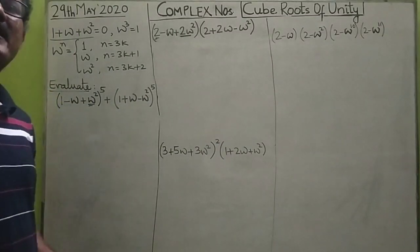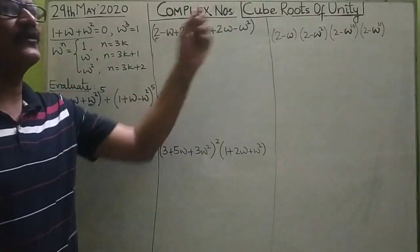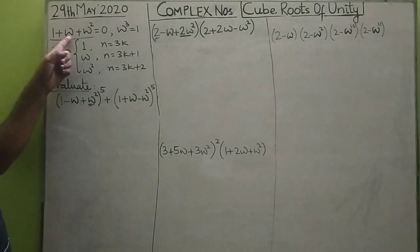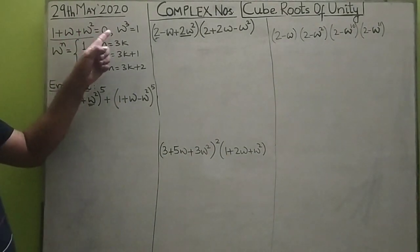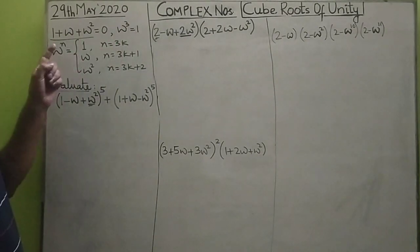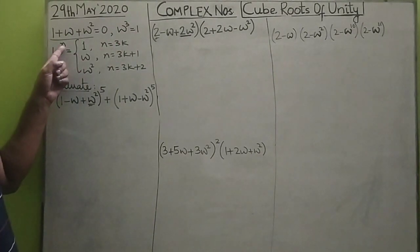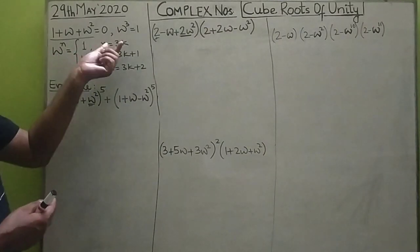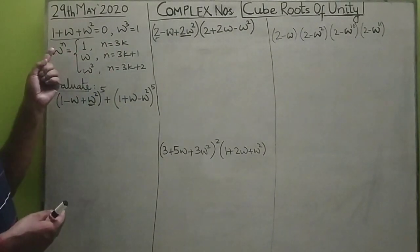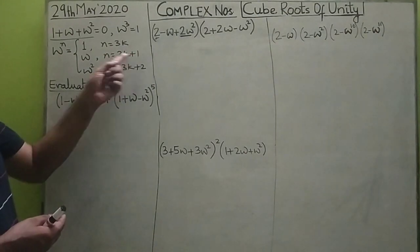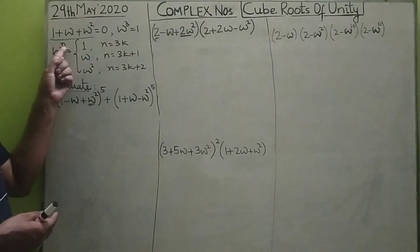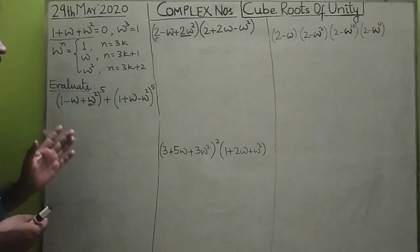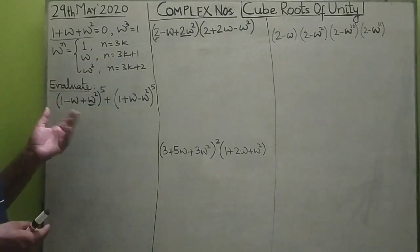Now let us do some numericals based on the properties of cube roots of unity. The properties we have studied: 1 plus omega plus omega squared equals 0, omega cubed equals 1, and omega raised to a power greater than 3 can be reduced by dividing the index by 3 and using the remainder — remainder 0 gives 1, remainder 1 gives omega, remainder 2 gives omega squared. Let us use these properties in solving these sums.